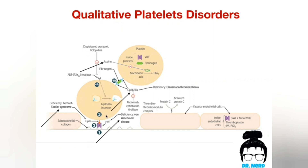The first two qualitative disorders happen at step two, adhesion. Bernard-Soulier syndrome happens as a result of GP1b deficiency, which is needed to connect the platelet to von Willebrand factor in the blood vessel — so adhesion won't happen. The other disorder is von Willebrand disease, which happens either due to von Willebrand factor deficiency or a defect in von Willebrand factor, so adhesion won't occur because the factor isn't functioning.